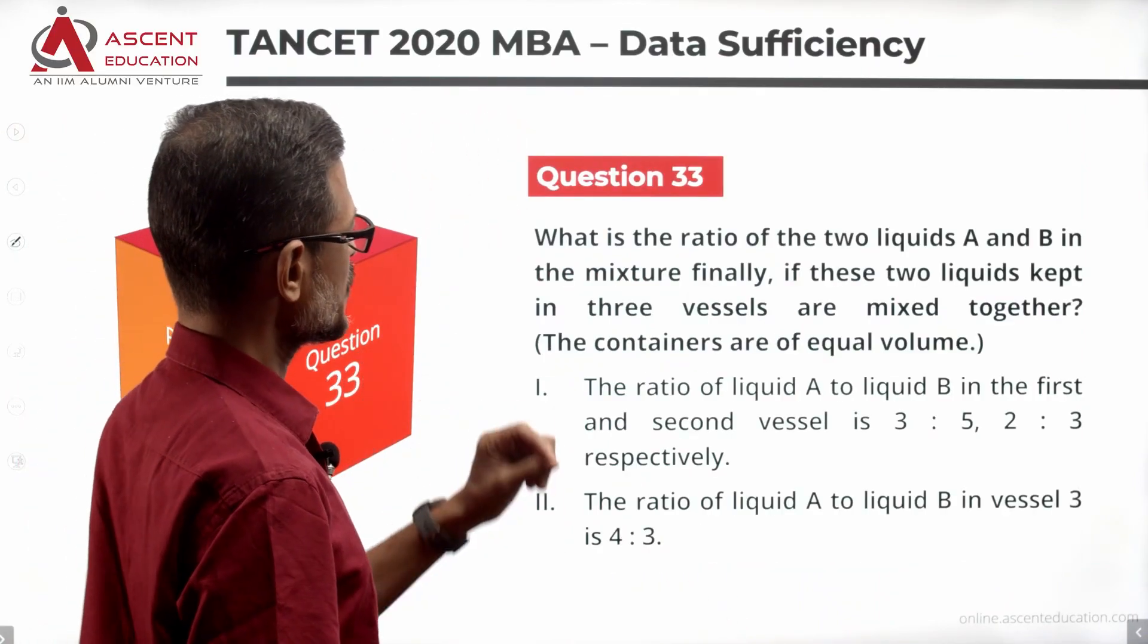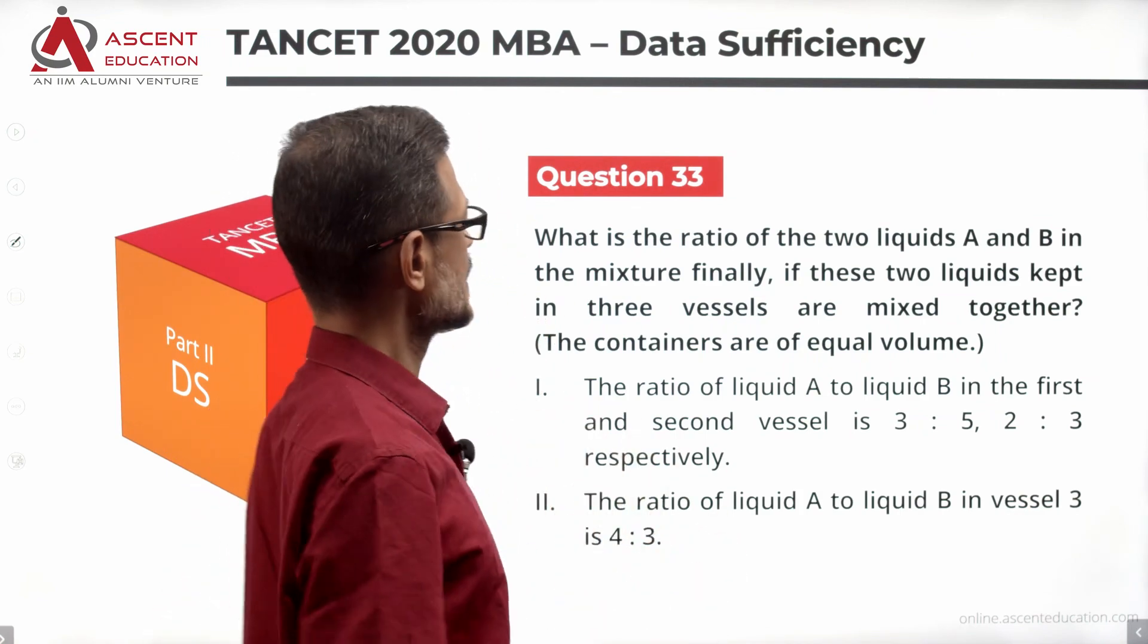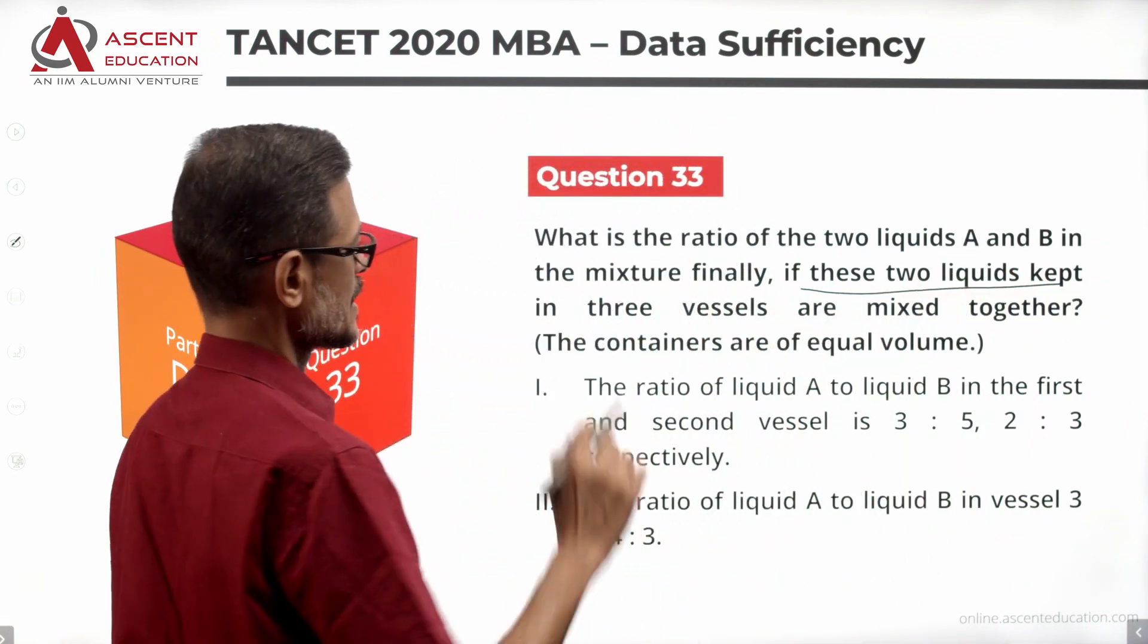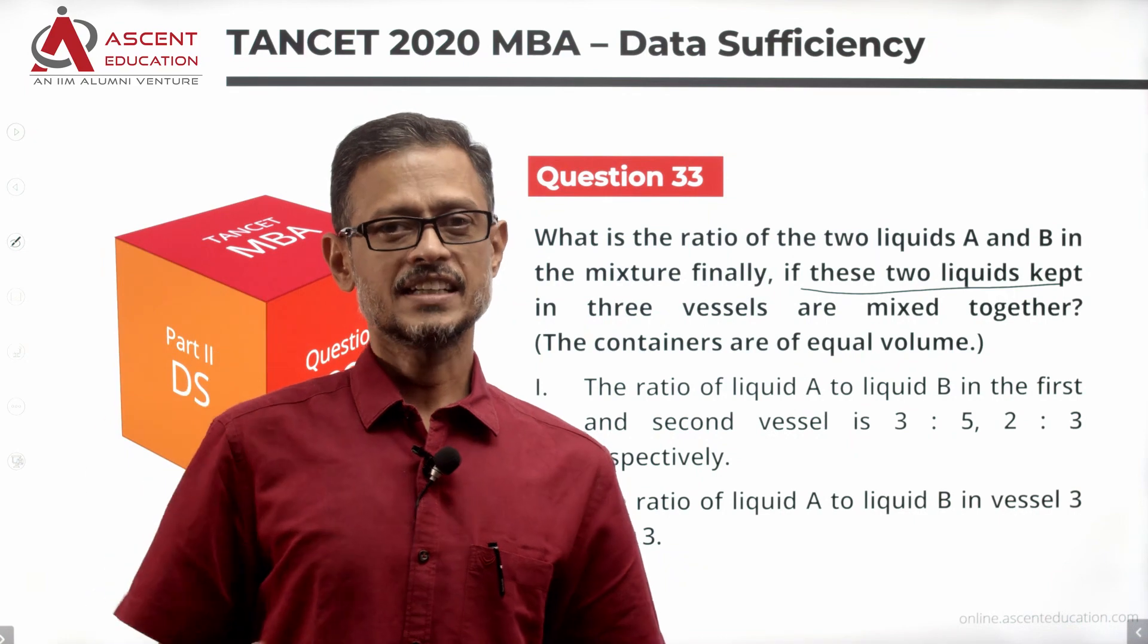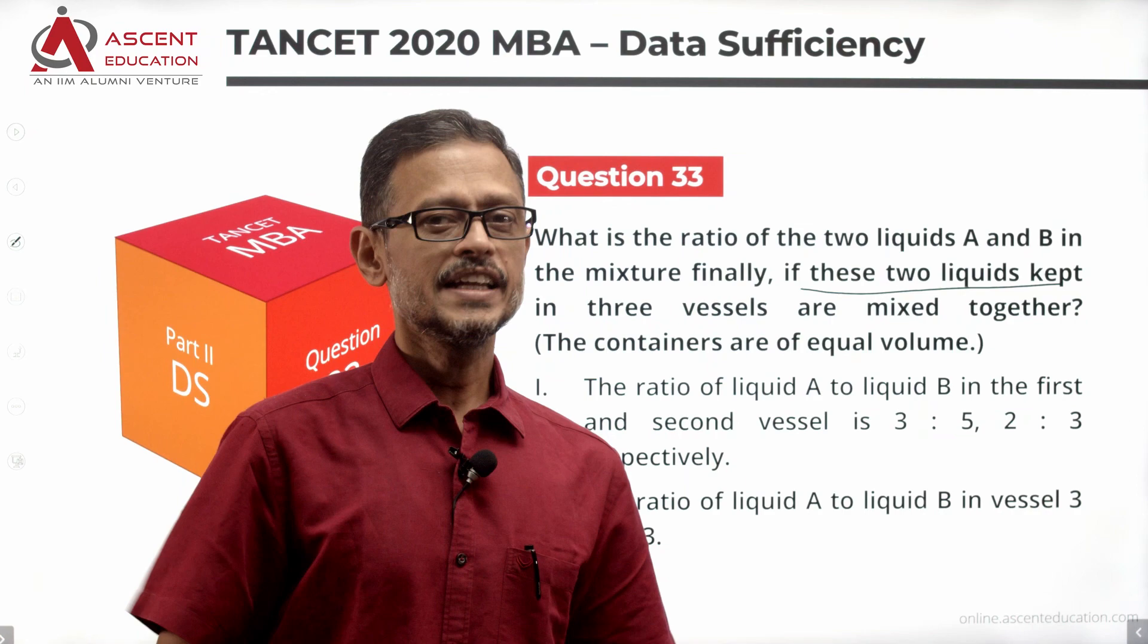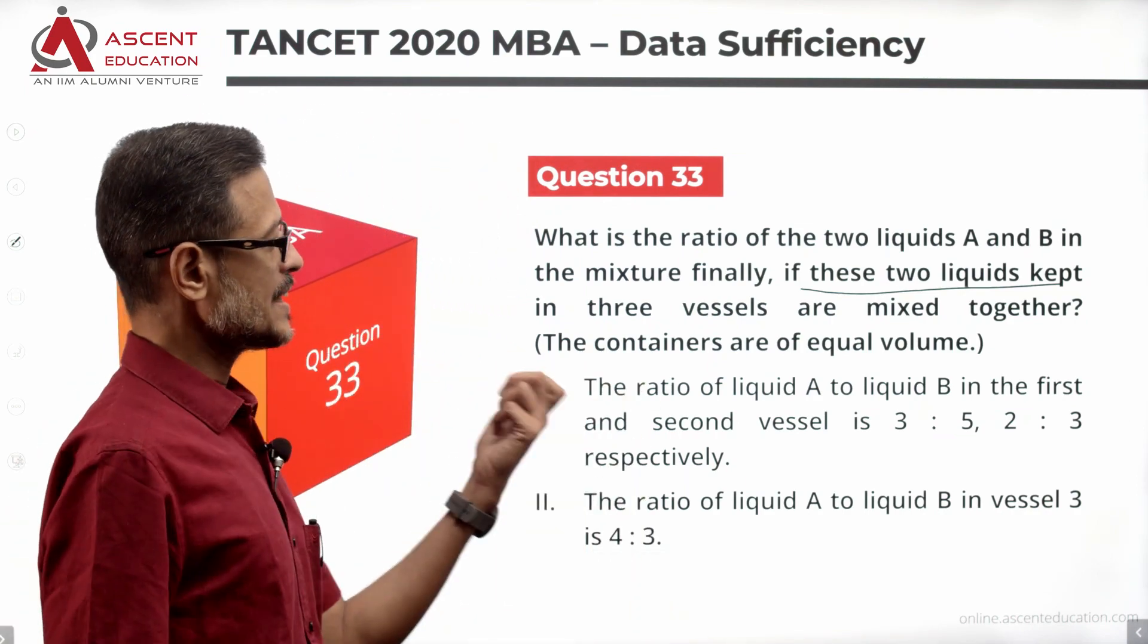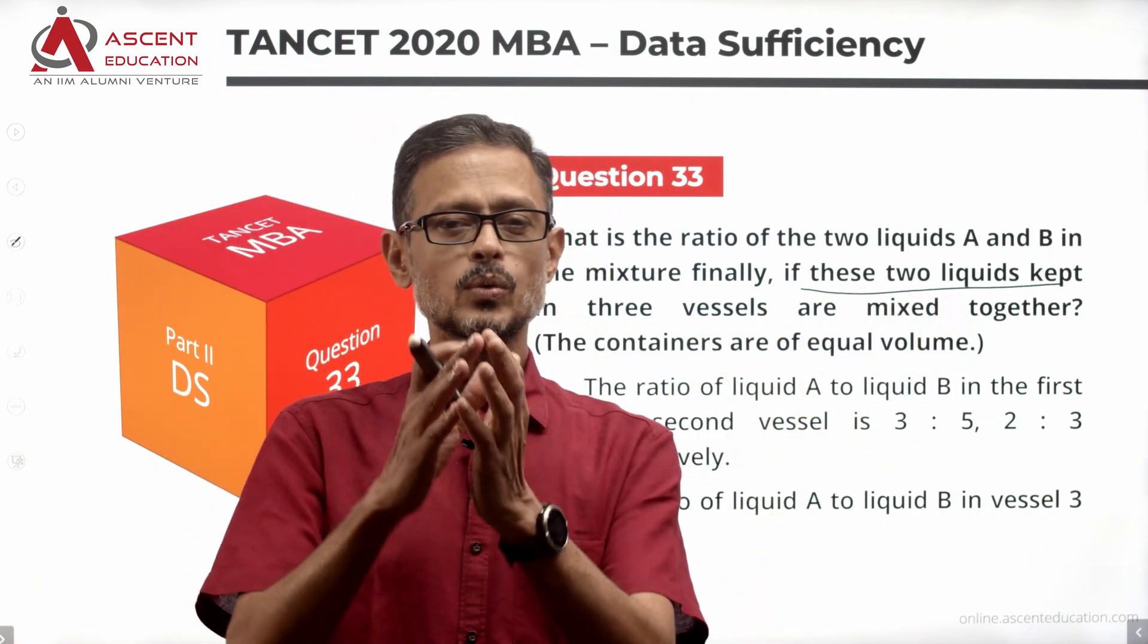Question one: What is the ratio of the two liquids A and B in a mixture finally, if these two liquids kept in three vessels are mixed together? Three vessels contain liquids A and B, mixed in a final mixture. A is to B ratio - the containers are of equal volume. Three vessels are of equal volume, the volume is the same.